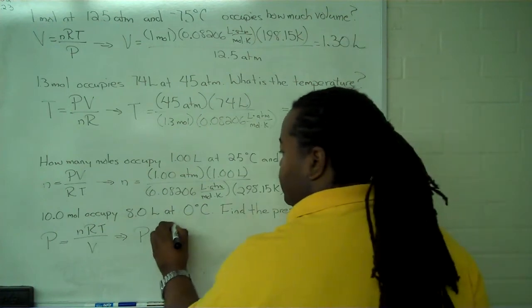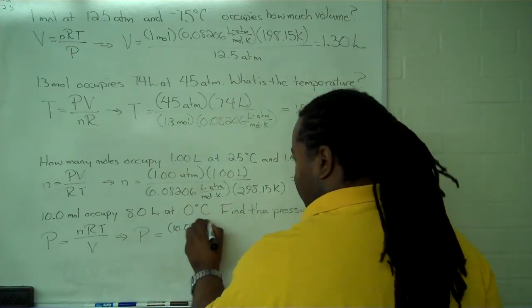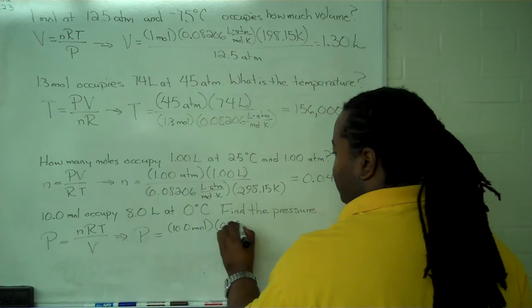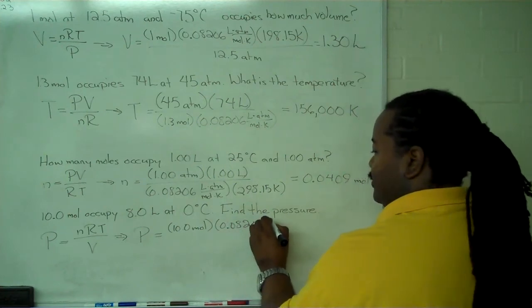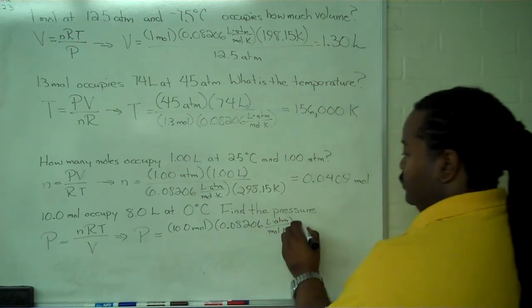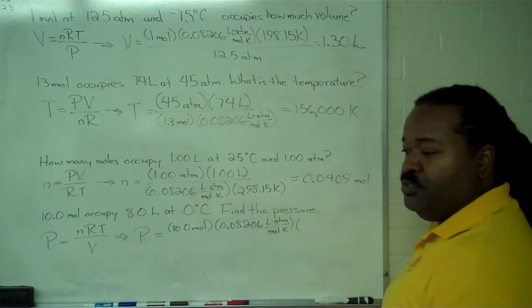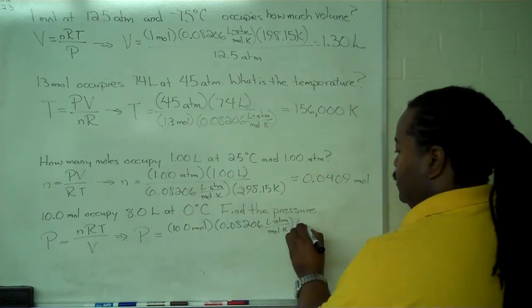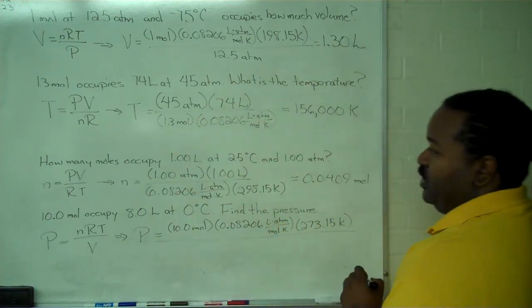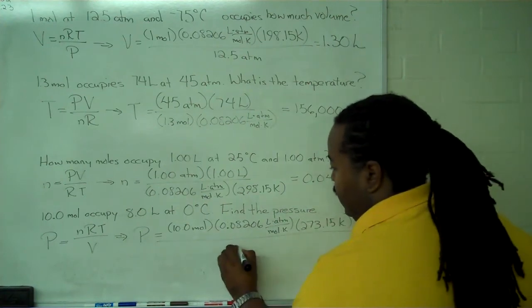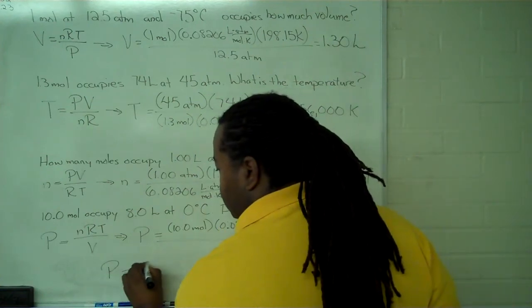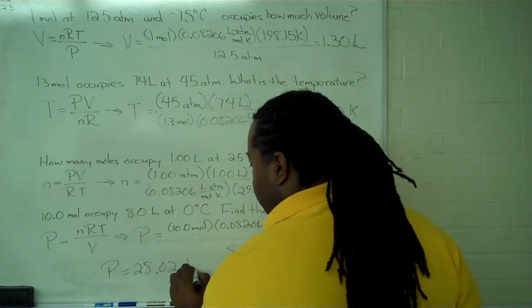And we can just plug in our values here. We have 10 moles, our gas constant, 0.08206 liter atmospheres per mole Kelvin, and then our temperature, 0 degrees Celsius, easy to convert, to 273.15 Kelvin. And we divide all of that by the volume, which is 8.0 liters. And so our final answer here for the pressure then is 28.02 atmospheres.